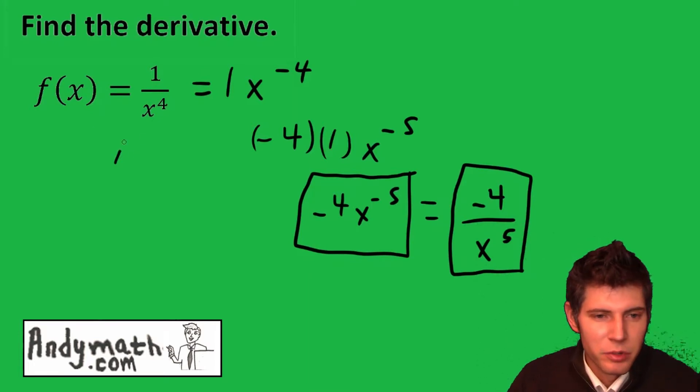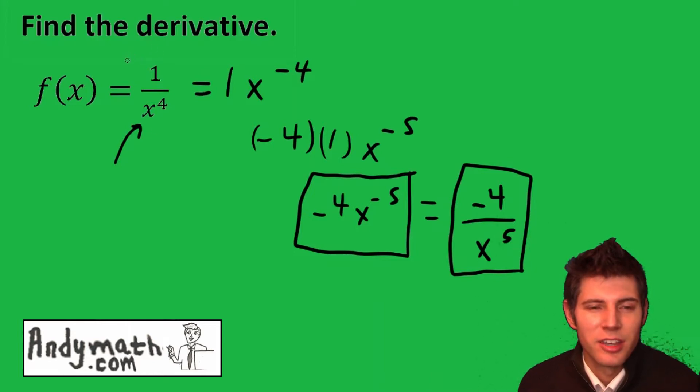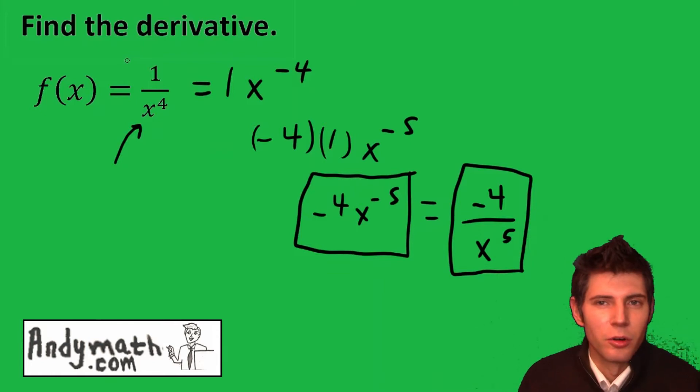One other note, this might look like you would use quotient rule. But the reason why we didn't want to use quotient rule is because this 1 really isn't a function. You kind of save quotient rule for when it's a function over a function. And 1 technically is a function, but it's not complicated enough to justify using the quotient rule. We're just going to bring it up top.